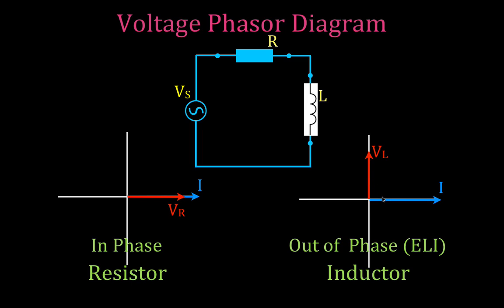That is our phasor diagram for resistive circuits and inductive circuits, but we have an RL circuit, so we need to combine these two, which we're going to do on the next slide. Before I do that, I want to remind you that you can calculate the voltage across the resistor as V equals I times R, and the voltage across the inductor as V equals I times XL. X is the symbol for reactance — resistors have resistance, while inductors and capacitors have reactance. We have XL because this is the reactance of the inductor.